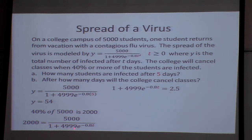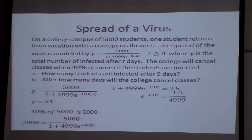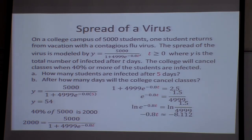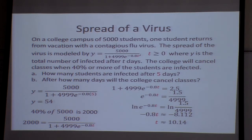Now, minus 1 from each side, and then divide by 4,999, which gives me this. To get rid of the E, I take the natural log of both sides — natural log of that number gives me negative 8.112. Then negative 0.08t, divided by negative 0.08. So they would cancel classes after 10.14 days, or after 10 days they will have 40% of their students affected.